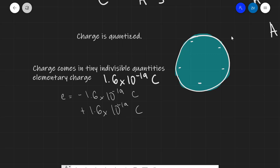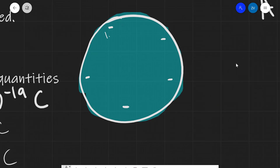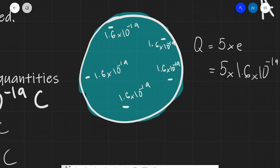Imagine a really tiny sphere where we can see the individual electrons — in this case, we have five individual electrons. Each electron contributes 1.6 times 10 to the power of minus 19 coulombs. This means the total charge on this sphere, Q, is equal to 5 times the elementary charge, which is 5 times 1.6 times 10 to the power of minus 19 coulombs, giving approximately 8.0 times 10 to the power of minus 19 coulombs.